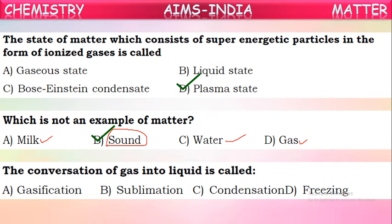Question 13: The conversion of gas into liquid is called what? The conversion of a gas into liquid by cooling is called condensation.